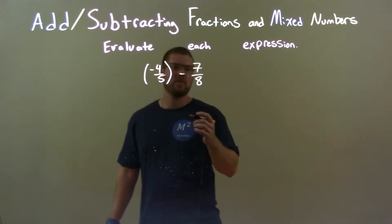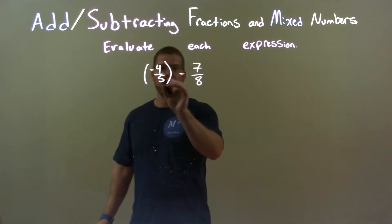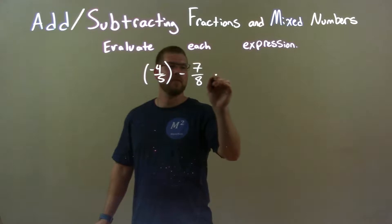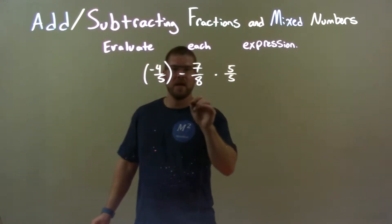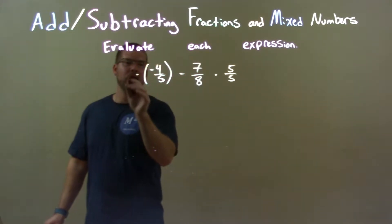So to do that, what I like to do is just take the base right here, this five, and multiply the second number by five over five. Then I take this base, which is the eight, and multiply the first number by that number over itself, eight over eight.